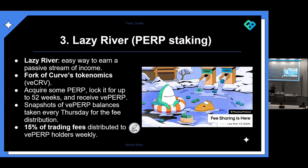The third way is getting involved with the project by becoming a token holder. Perpetual DEXes all have some sort of staking or reward program — Perpetual Protocol's version is called Lazy River. It's a fork of Curve's tokenomics using a vote-escrow token model: you can lock your token for up to 52 weeks, and the longer you lock, the more vePERP you receive. A higher relative share of vePERP supply means a higher proportion of fees earned. Snapshots of vePERP balances are taken every Thursday for fee distribution — 15% of trading fees are distributed to vePERP holders every week.